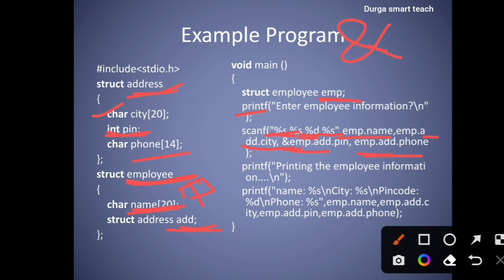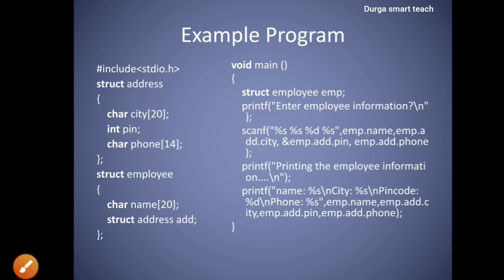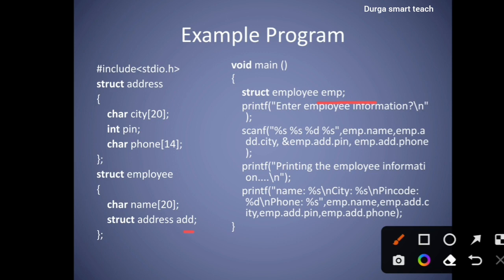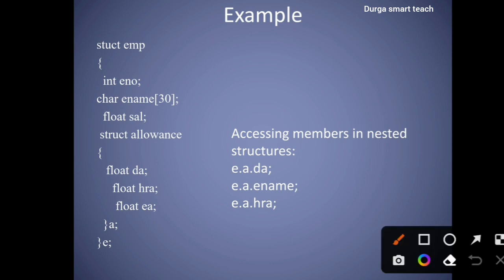To print the employee information: name is stored at emp.name, city at emp.add.city, pin code at emp.add.pin, and phone number at emp.add.phone_number. In a nested structure, if you want to access the elements of one structure, you need to use both variables — that is emp and add. Similarly, to access any element in these structures, you need to use both variables, e and a.